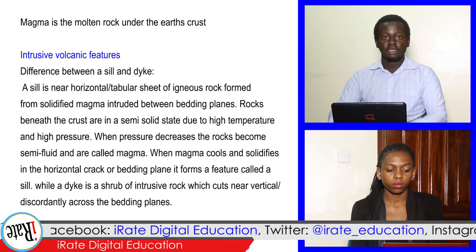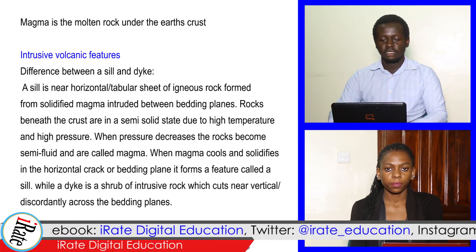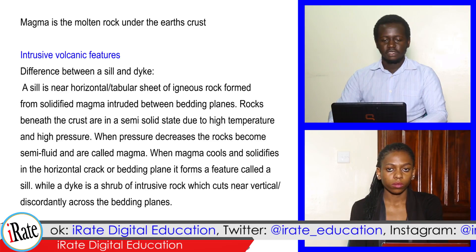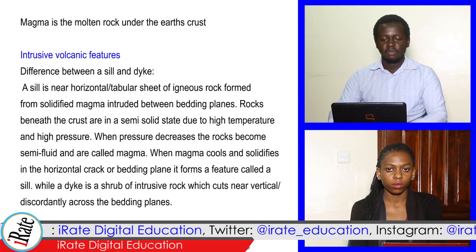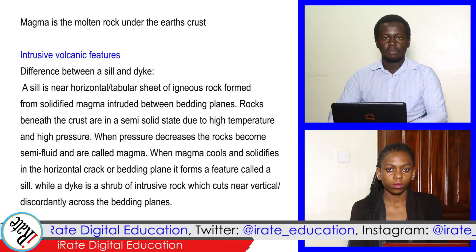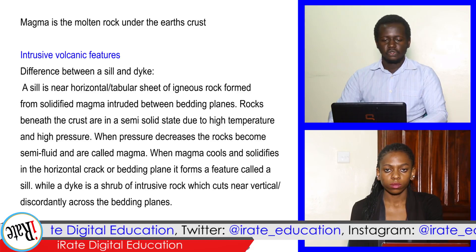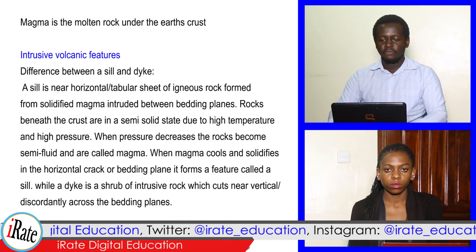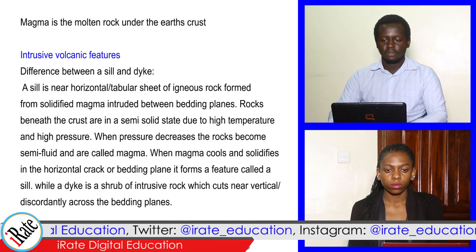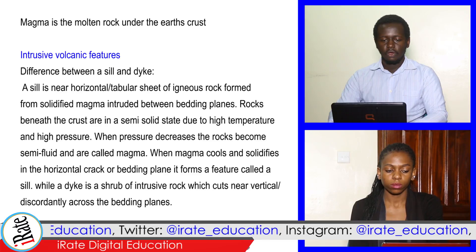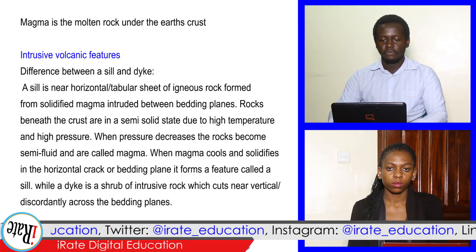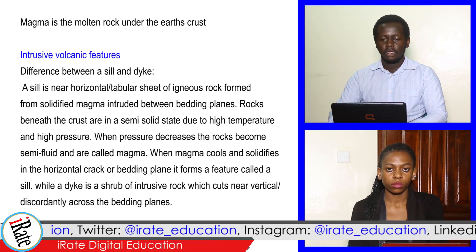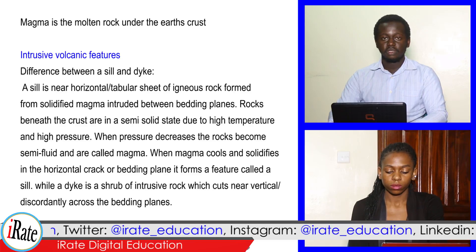Rocks beneath the crust are in a semi-solid state due to high temperature and high pressure. When pressure decreases, the rocks become semi-fluid and are called magma. When magma cools and solidifies in a horizontal crack or bedding plane, it forms a feature called a sill. A dike is a sheet of intrusive rock which cuts near-vertically or discordantly across the bedding planes.